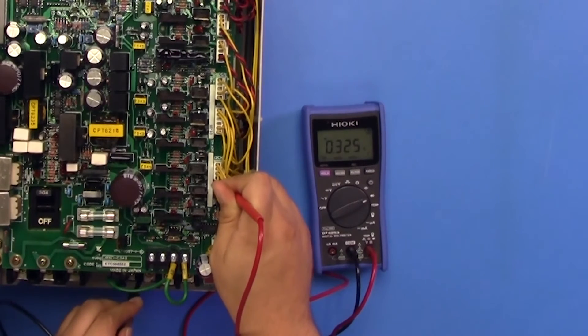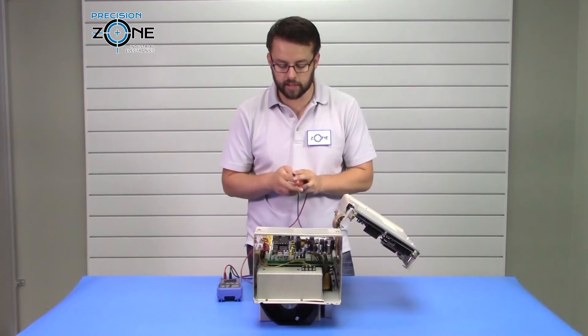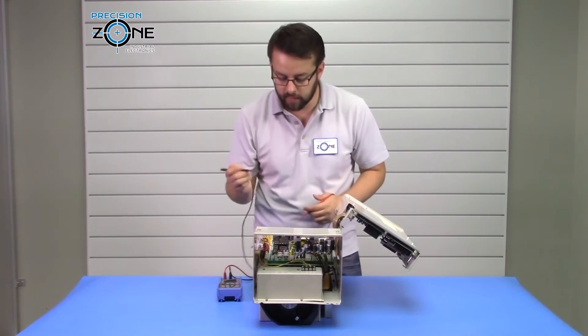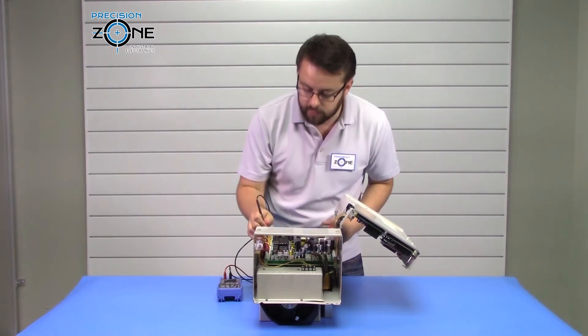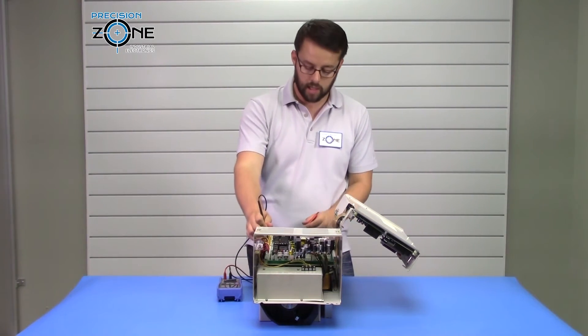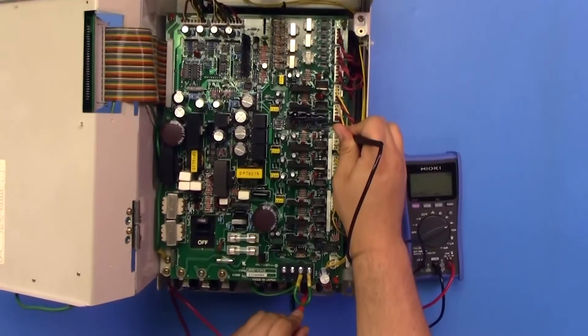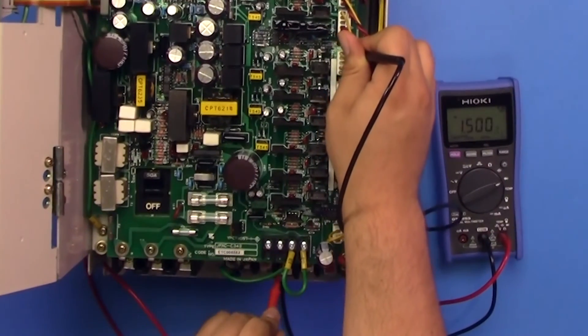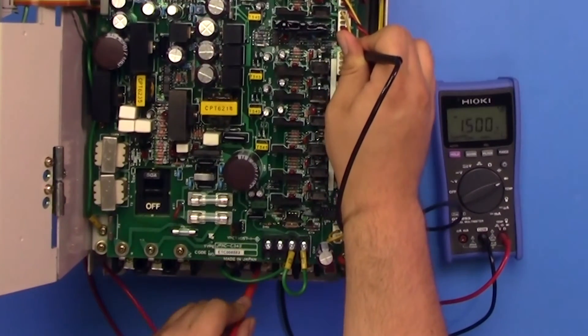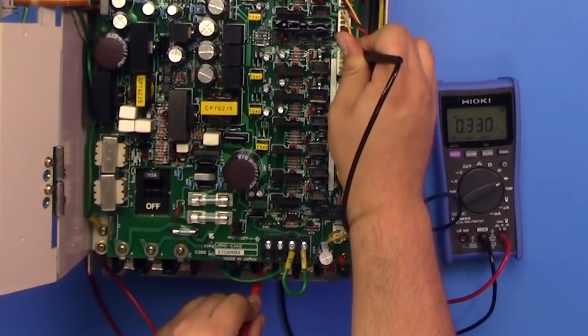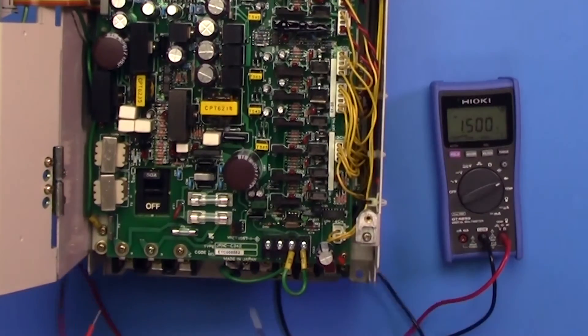Now you're going to switch your leads. Get the negative side of the digital multimeter and connect that to the positive side of the DC bus at this pin. You're going to check UVW, which should be about 0.33 volts. So that is normal.